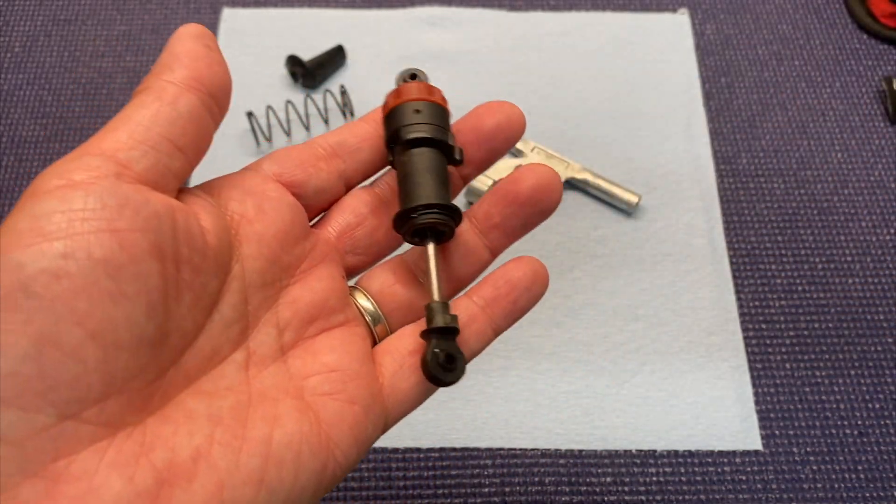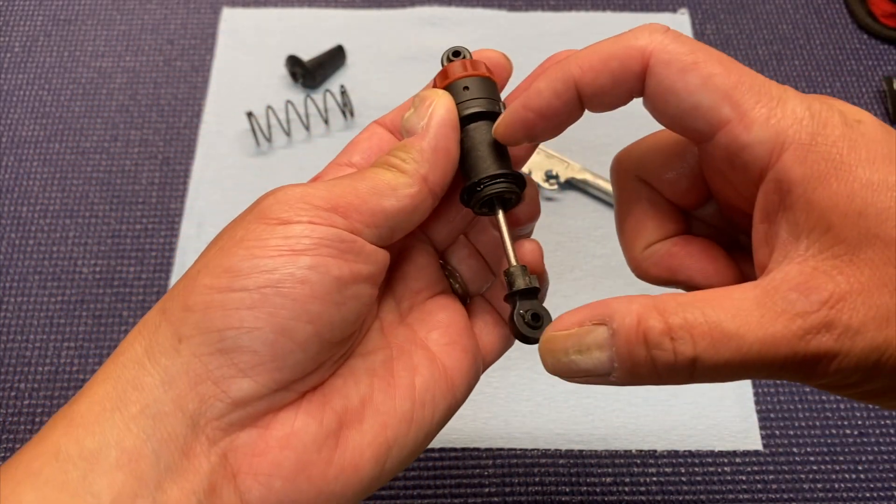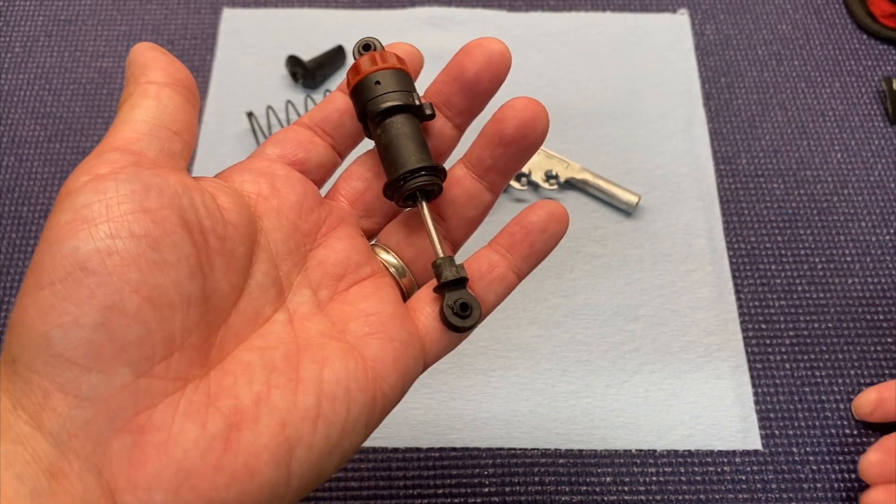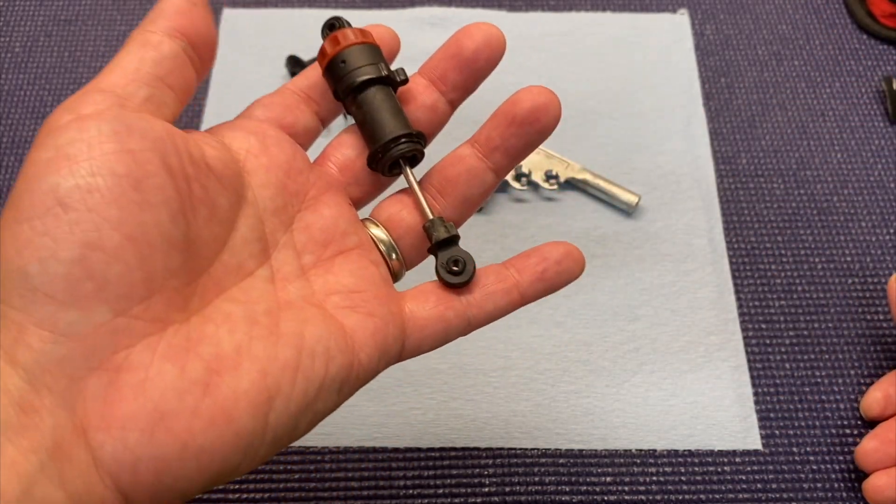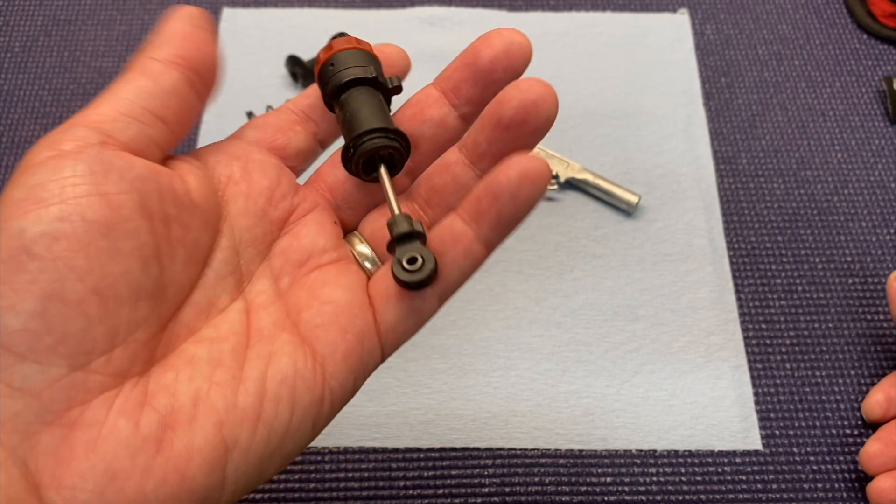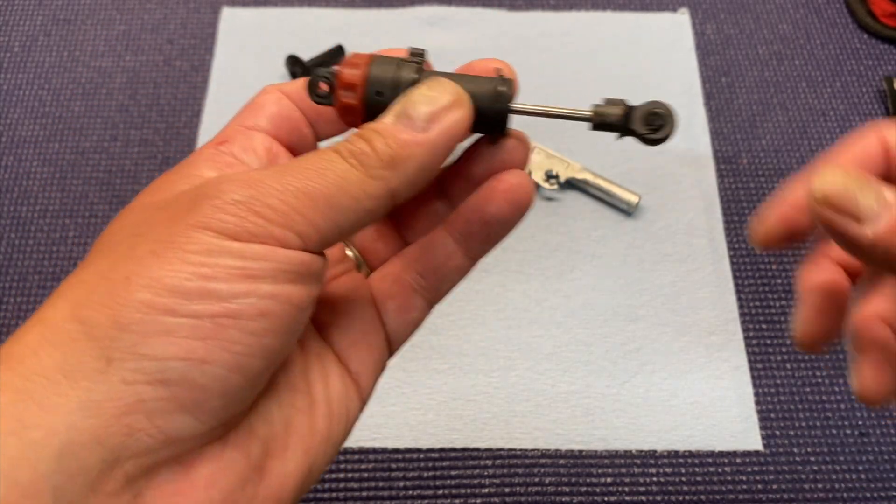So that was one of the weaknesses of the 3S line. This whole thing was like one piece, and the shock rod end was pressed or fitted onto the shock shaft and would tend to pull off. So it's cool that they did make some changes there.